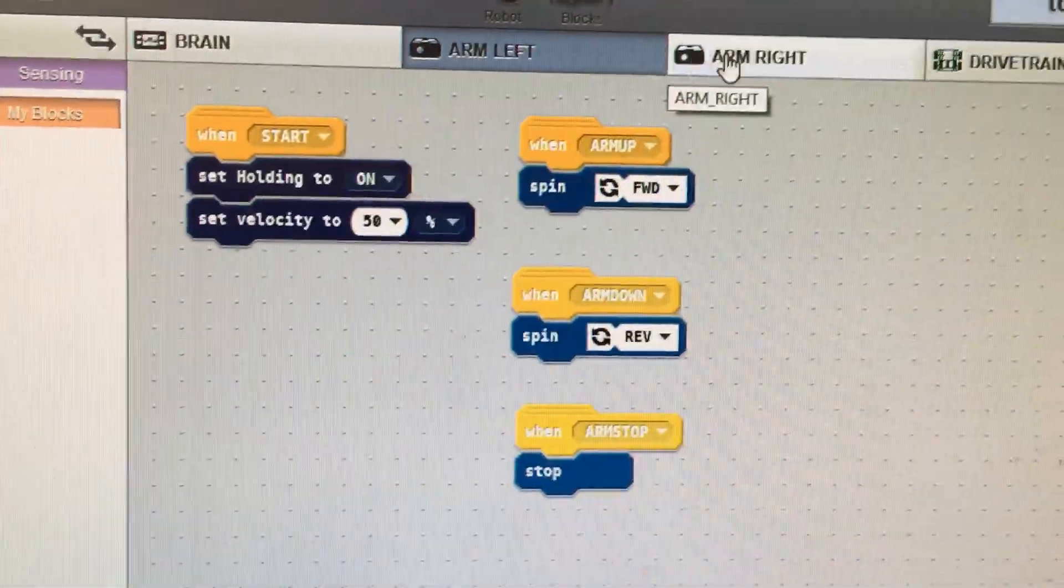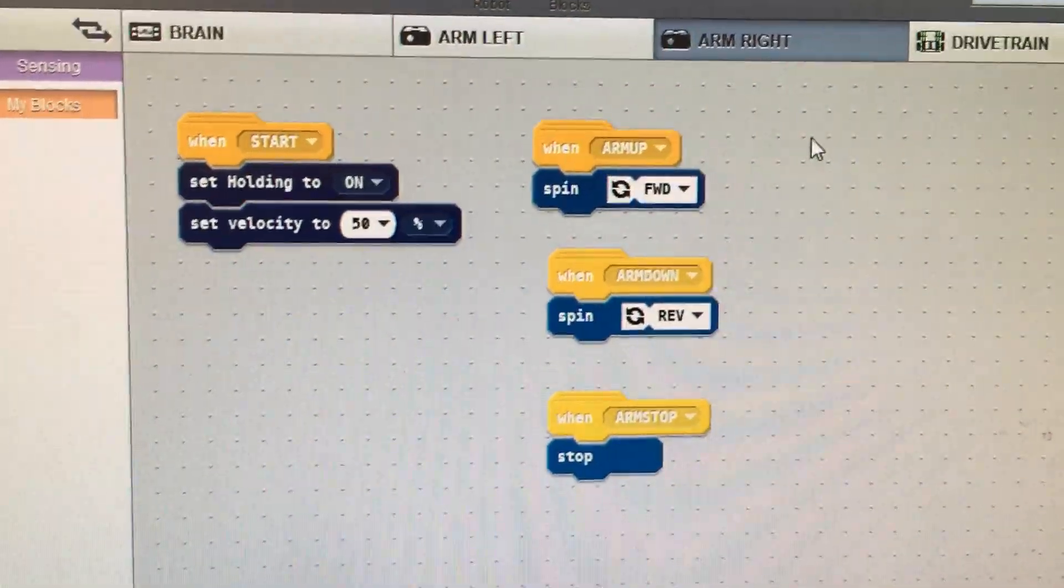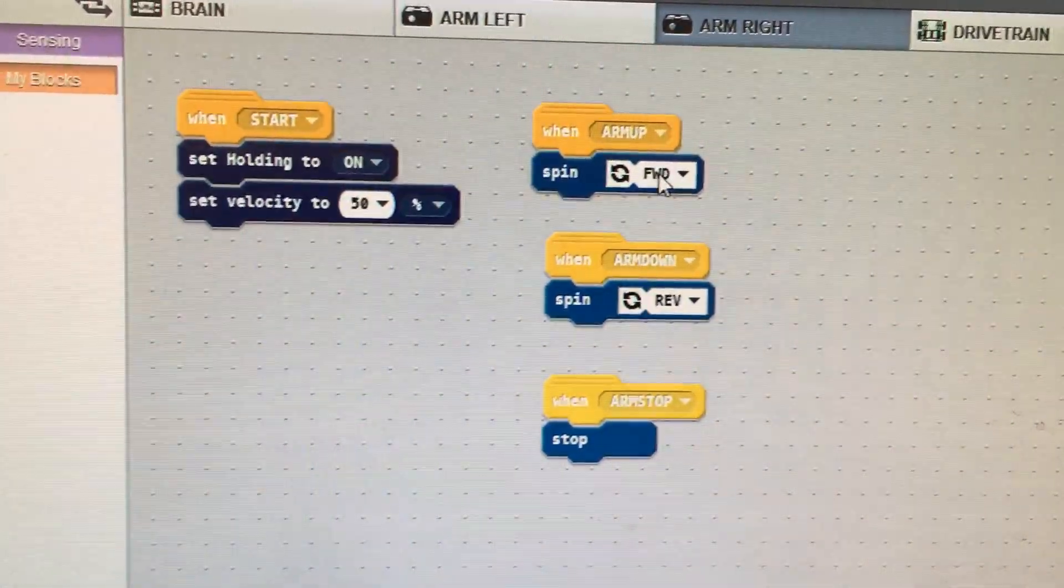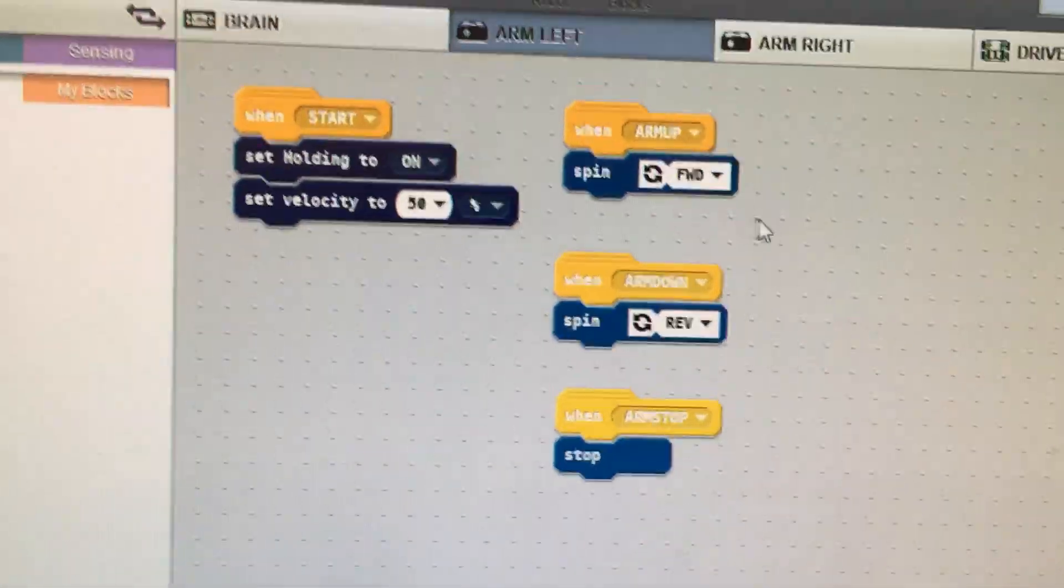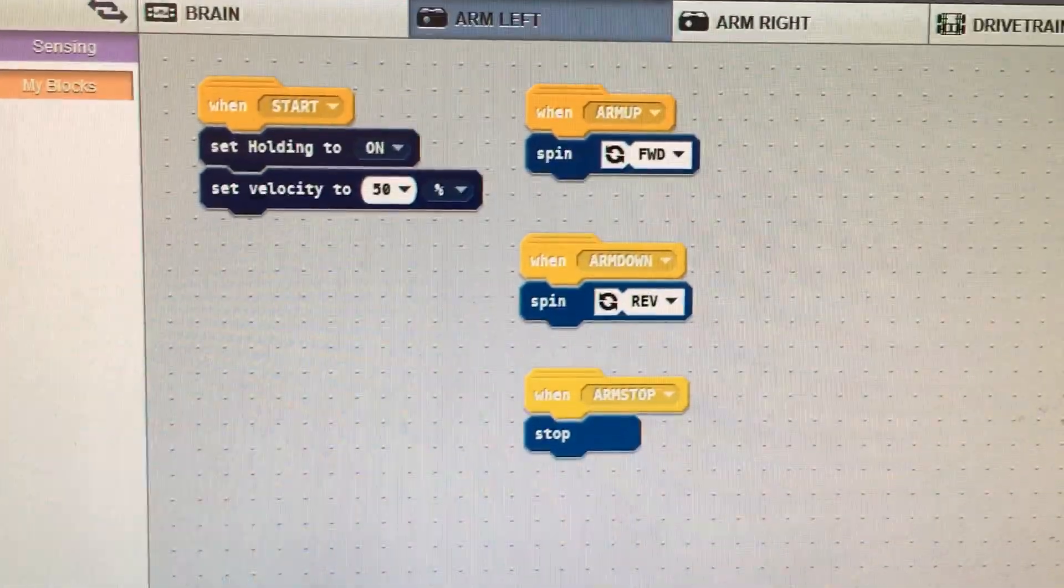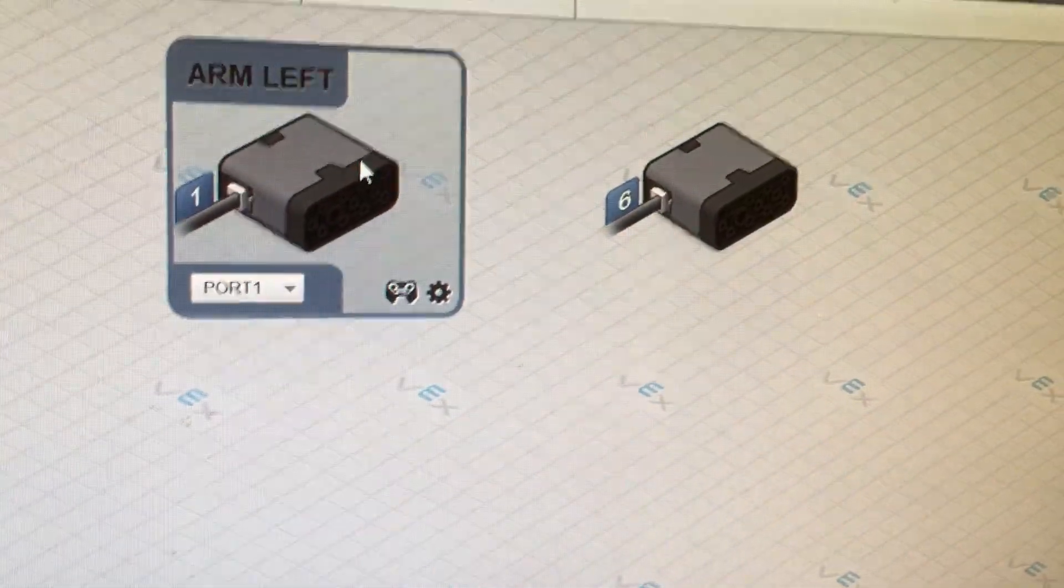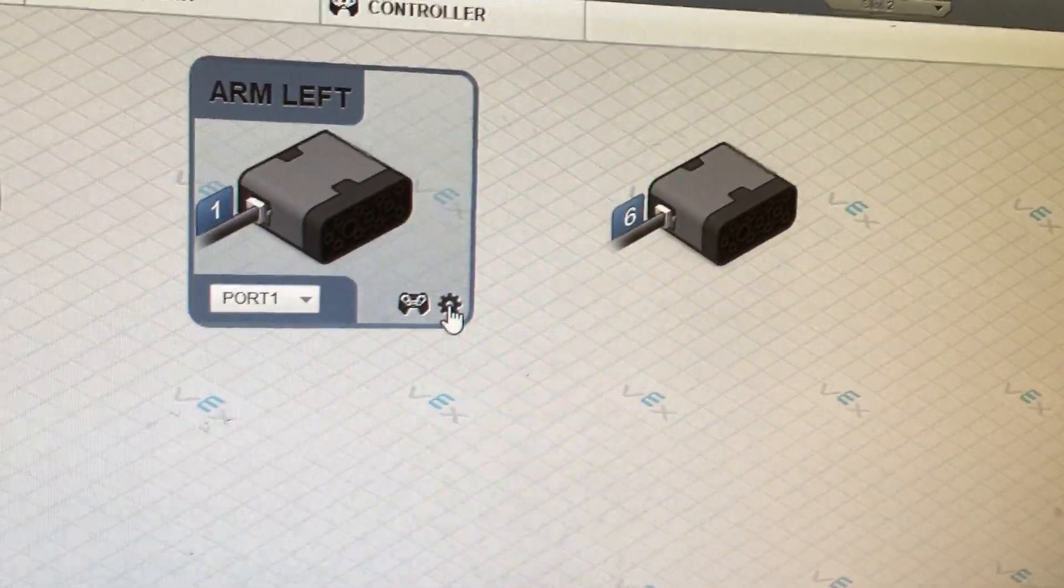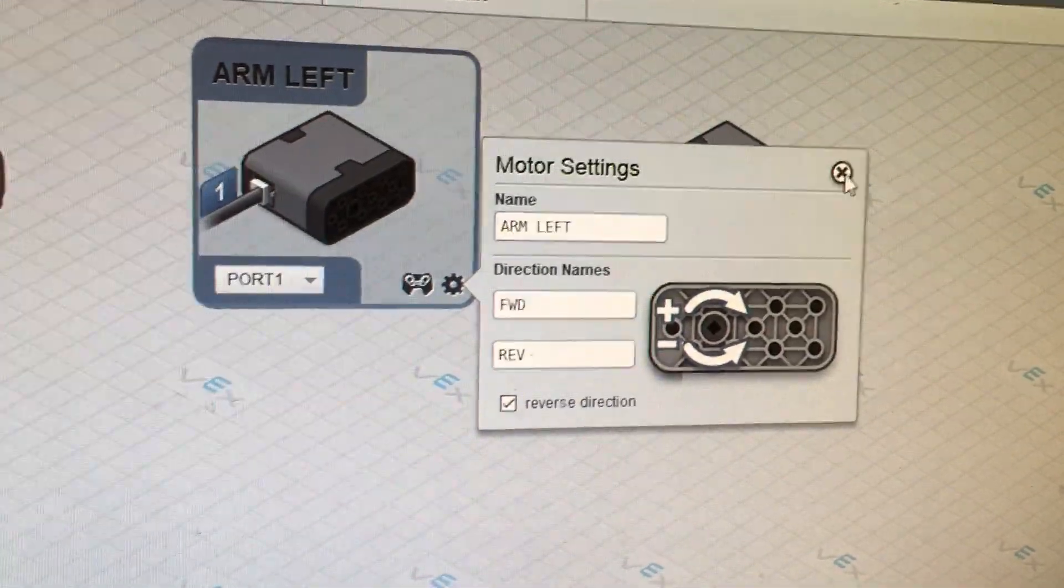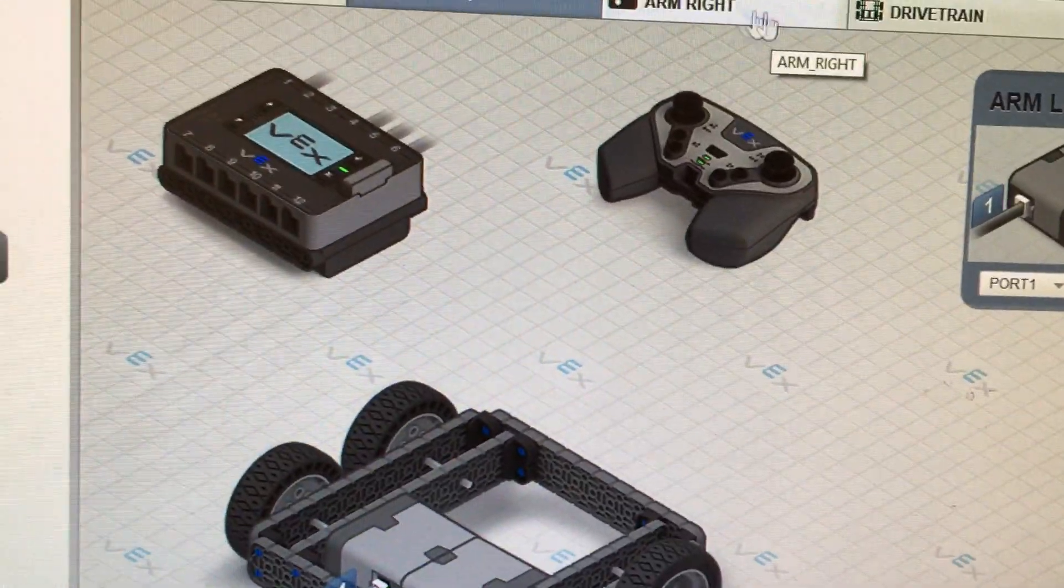Okay, that was arm left. Arm right is the same thing. And if you've noticed, arm up spins forward, arm down spins reversed. And arm up spins forward and arm down spins reversed. The reason they're both the same is, on arm here, we reverse the motor. You just have to reverse one of the motors. It doesn't really matter which one, just one of them.